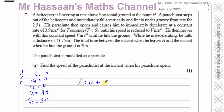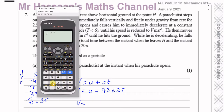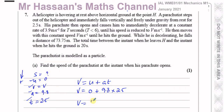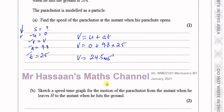So V equals 0 plus 9.8 multiplied by 2.5. That gives 9.8 times 2.5, which is 49 over 2, which is 24.5 meters per second. So that's the speed of the parachutist when his parachute opens: 24.5 meters per second.